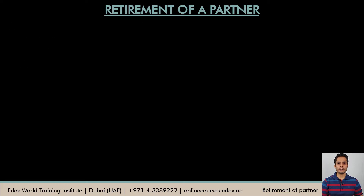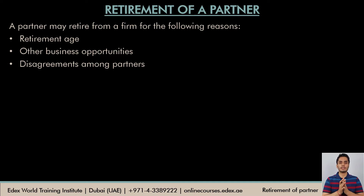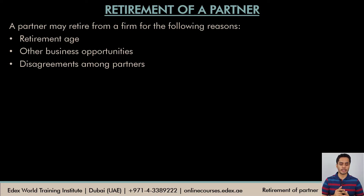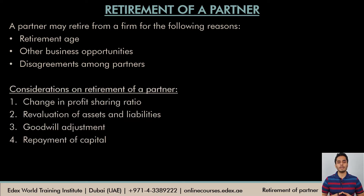So what is retirement of a partner? In an existing firm, when a partner decides to leave the firm, it is known as retirement of a partner. He may leave due to many reasons: maybe he's reached his retirement age, the partner finds better business opportunities outside, or there might be some disagreements among the partners because of which the partner is interested in moving out of the firm.